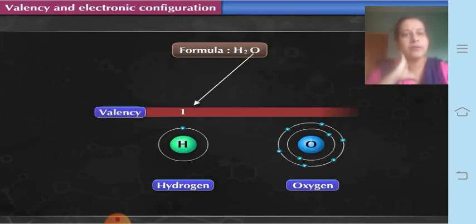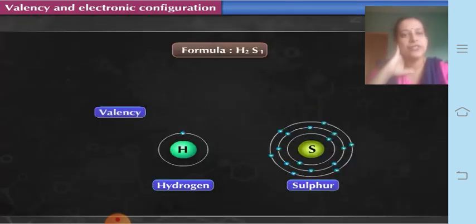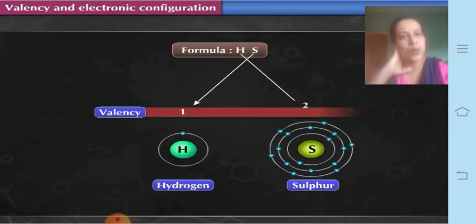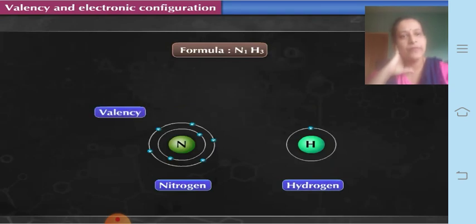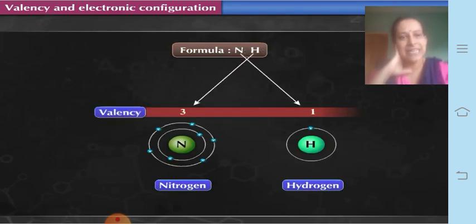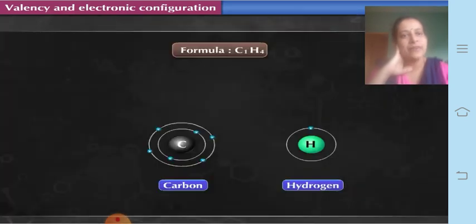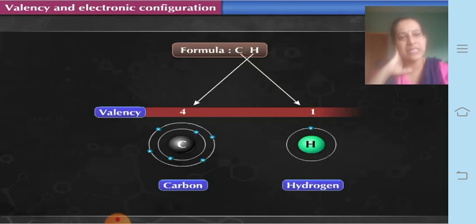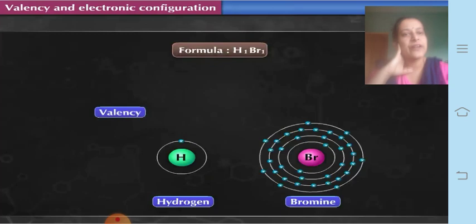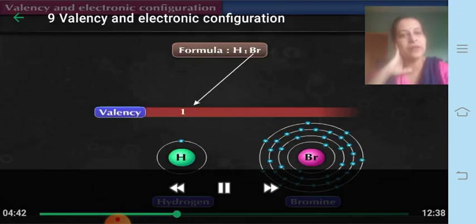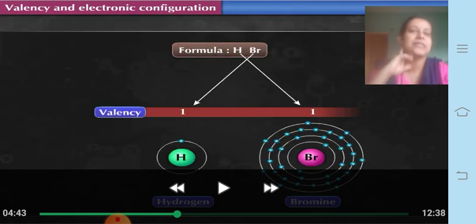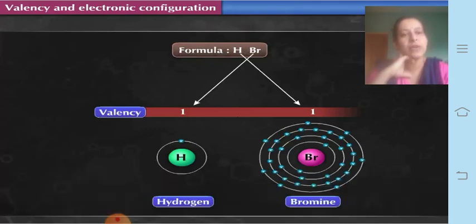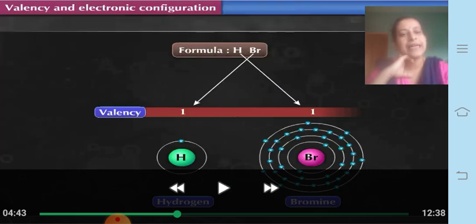In ammonia, valency of nitrogen is 3 and that of hydrogen is 1. In methane, valency of carbon is 4 and that of hydrogen is 1. In hydrogen bromide (HBr), valency of hydrogen is 1 and that of bromine is also 1. That is why the formula is HBr.